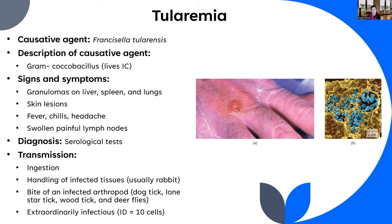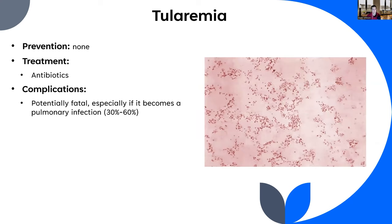Transmission includes bites from infected arthropods such as dog ticks, lone star ticks, wood ticks, and deer flies. Diagnosis is via serology. There is no vaccination. Treatment is antibiotics, but this is a serious disease — if it reaches the lungs, there's a 30–60% mortality rate. Due to its extremely low infectious dose, tularemia is considered a potential bioterrorism threat.